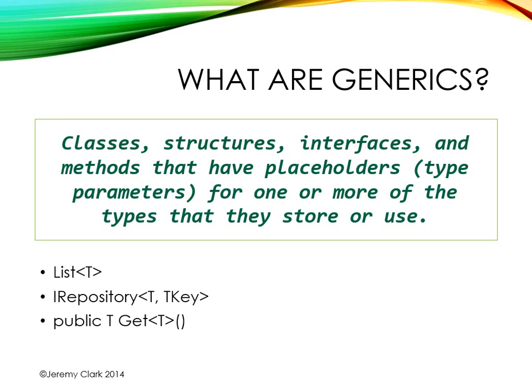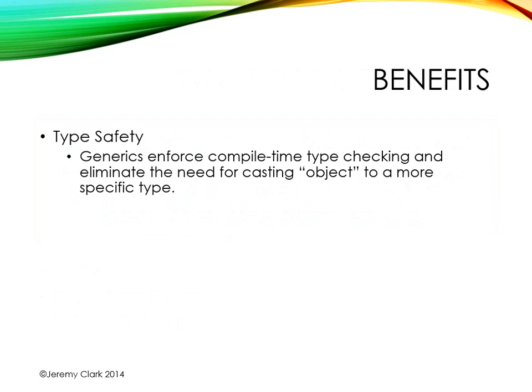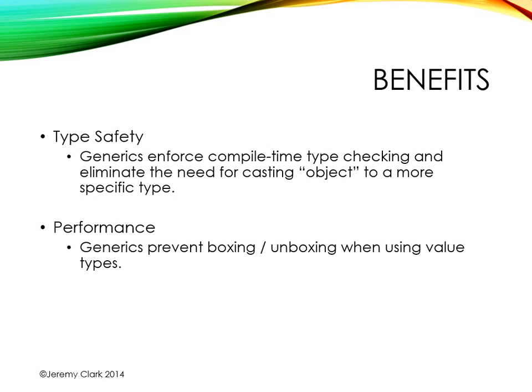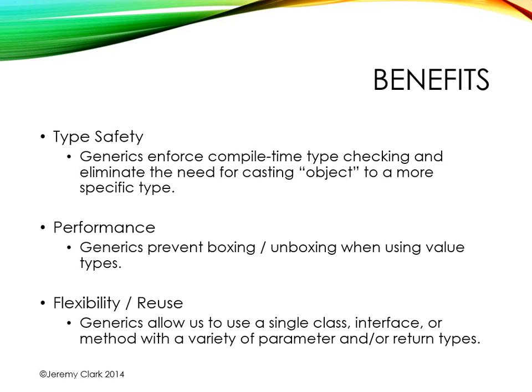This time we'll be looking at how we can use generic type parameters with methods. So why do we want to use generics? First, we get type safety. We saw when we were looking at collections that generic type parameters limit what we can put into a collection, and that means we know exactly what's coming out. They can also help us with performance — we can prevent the need to box or unbox value types when dealing with collections. And of course we have flexibility and reuse. Last time we saw how we could use generic type parameters to create a single interface that could work with a variety of different classes. This time we'll see how we can get flexibility and reuse out of our methods by using generic type parameters.